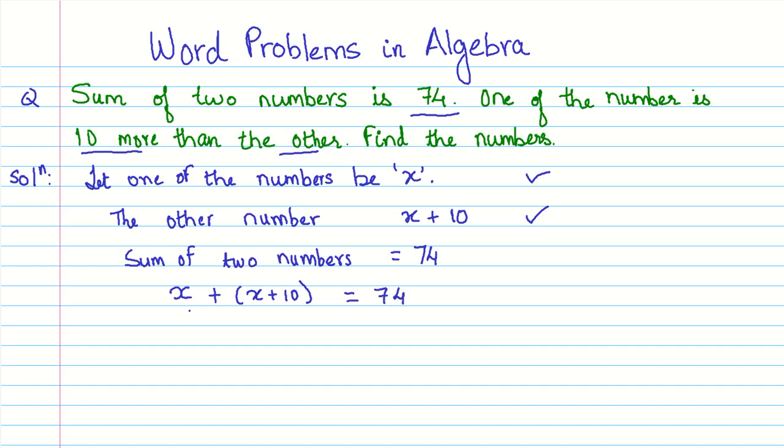Now if we simplify this, we can add these two variables. x plus x gives us 2x plus 10 equals 74. So now what we have done, this is the first and the most important step, that we have formed our equation. This is what we need to do. We need to form the equation first. Now once we have formed the equation, if we find out x, then we can find out x plus 10 and we get the solution. We will get what the two numbers are.